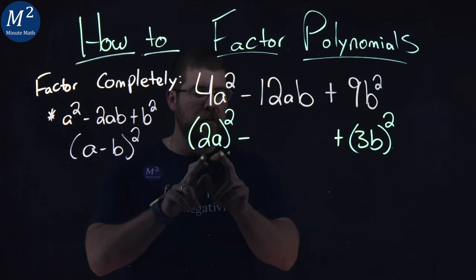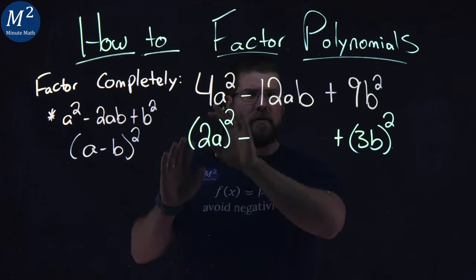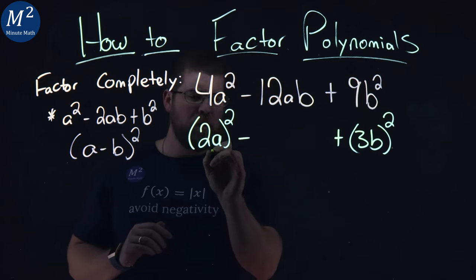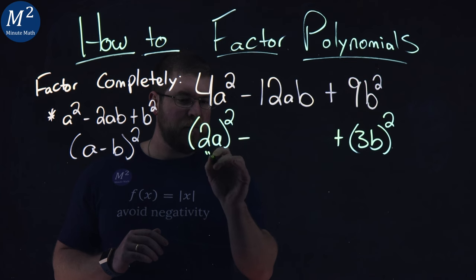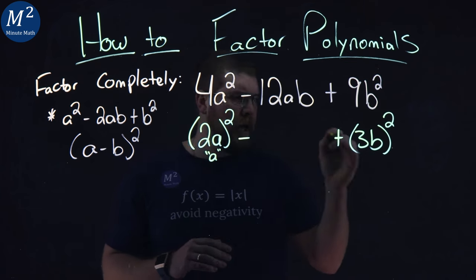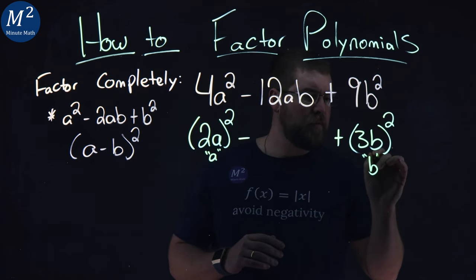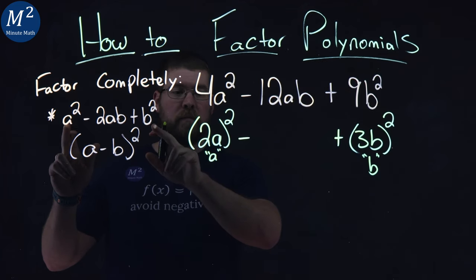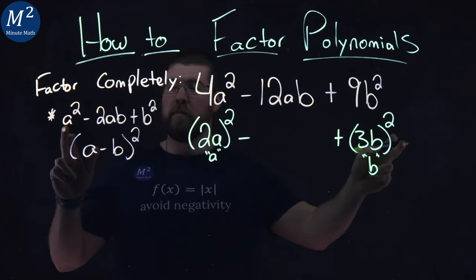Well, if my a value—it's kind of tricky with the forms here, because our variables are also a and b. If I call 2a my a value, and 3b my b value, we have the beginning and end of that formula: a² and b².